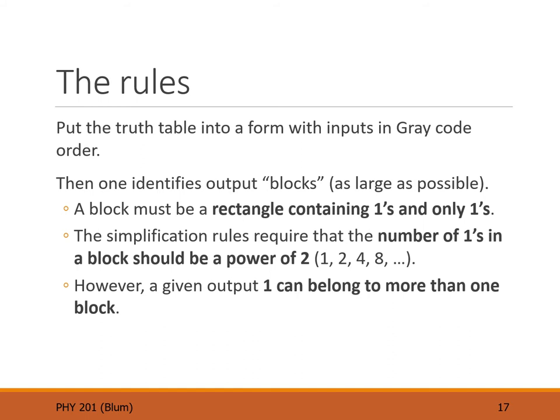Now we put together the rules for a Karnaugh map. Rule number one: the truth table must be put in gray code order. When simplifying, we look for what I call a block. We want the blocks to be as large as possible. A block is a rectangular shape containing ones and only ones — it can't be an L-shape, it can't have a zero in the corner. These rectangles of outputs must have a size that is a power of two: one, two, four, or eight.